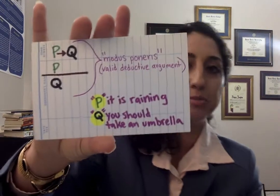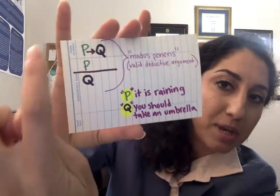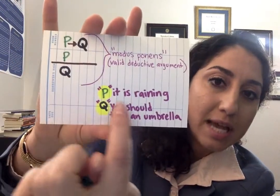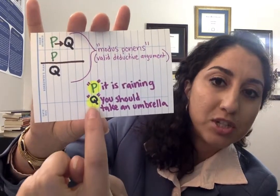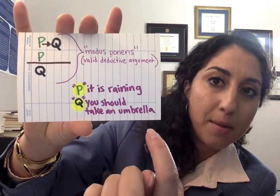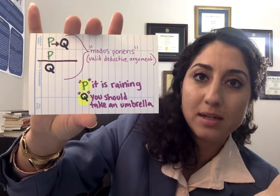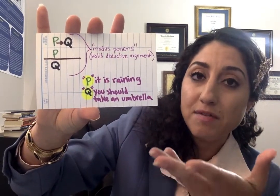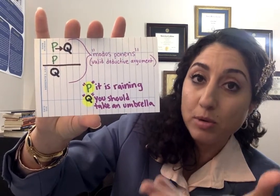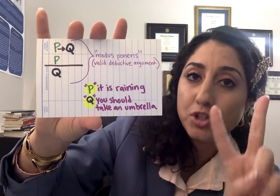When you're doing propositional logic, you're going to use a lot of propositions. Propositions are statements that can be true or false. Here is an argument that has P as the proposition 'it is going to rain' and Q as the proposition 'you should take an umbrella.' In symbolic logic, in propositional logic, we get a valid argument form called modus ponens, which uses two propositions.